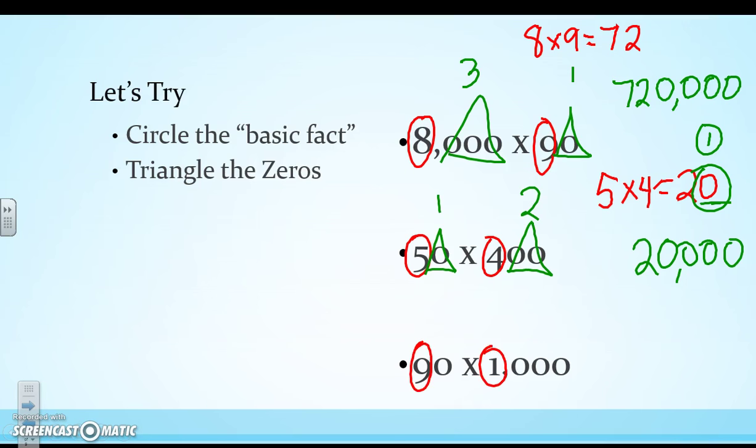All right, and then 90 times 1,000. We have 9 times 1 is 9. Triangle the 0s. So I have 1 and 3 more 0s. So that's a total of 4. So 90 times 1,000 is 90,000.